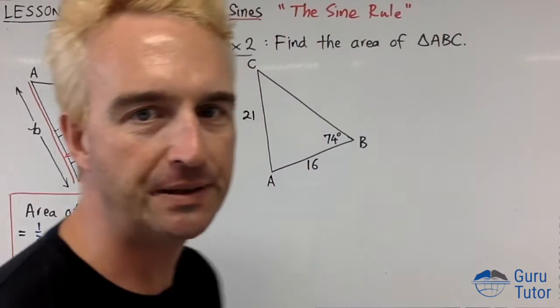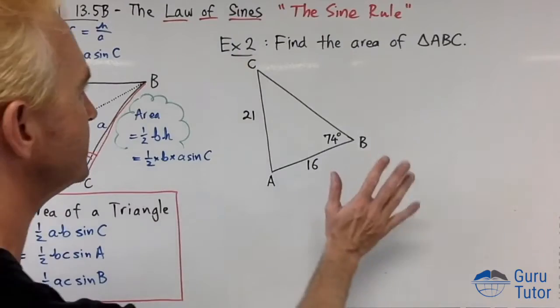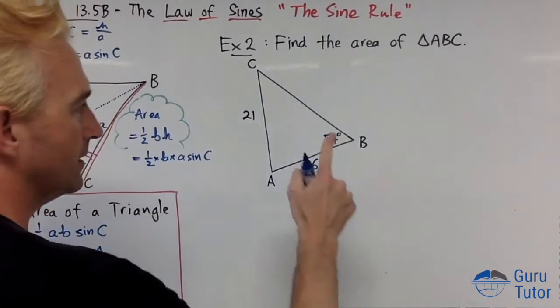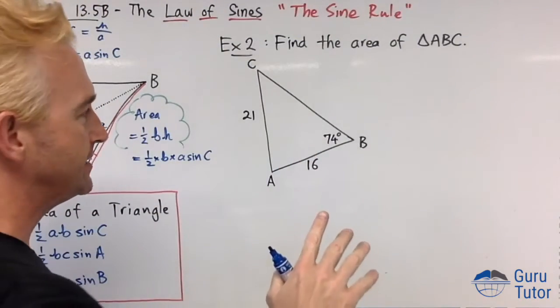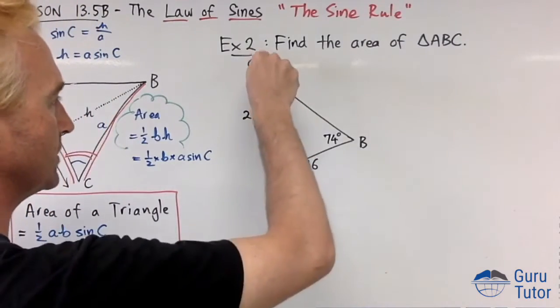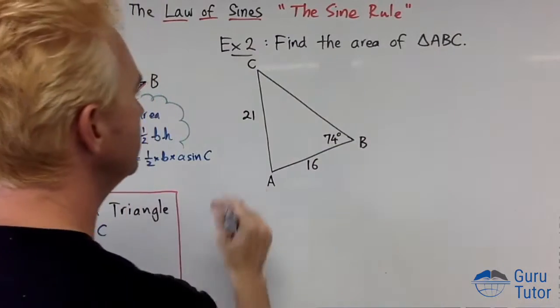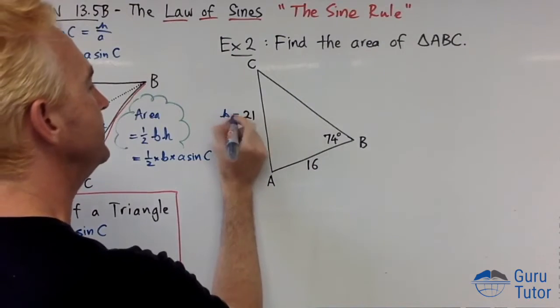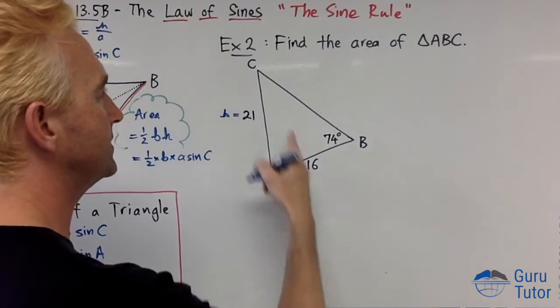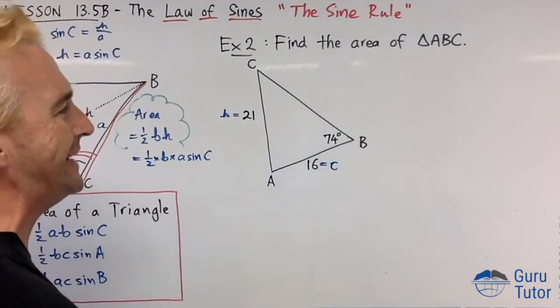Let's do an example: find the area of this triangle. Half ab sine C. Do we have two side lengths? Yes we do, 21 and 16. We have side b and side c, and we need the angle between them, so angle A.